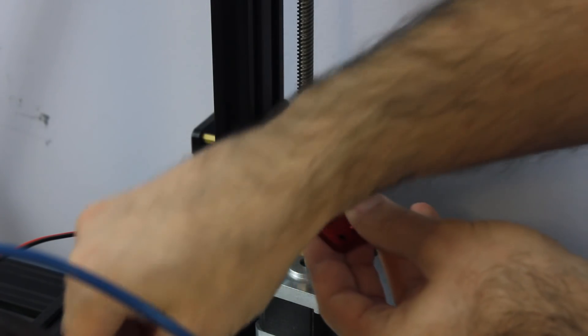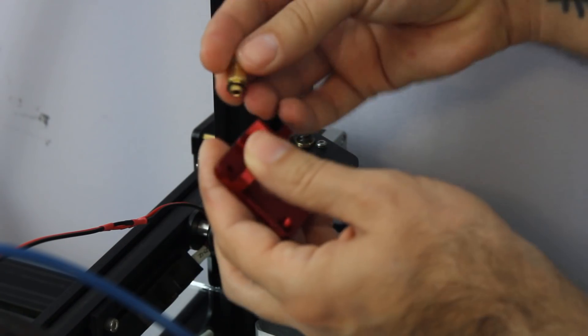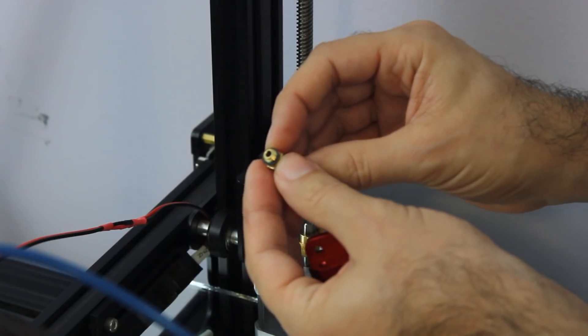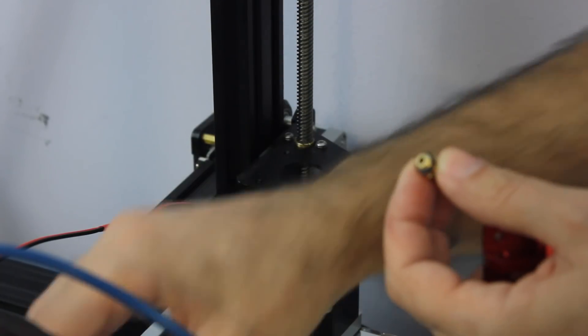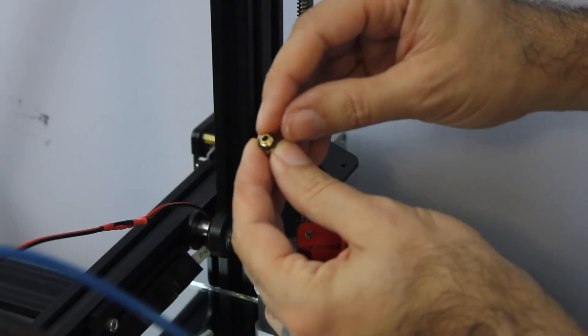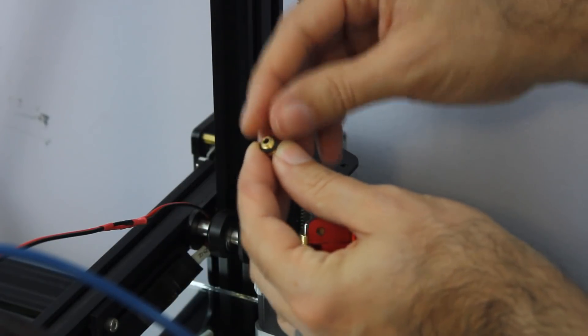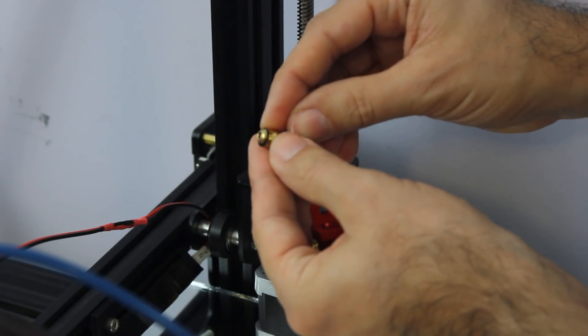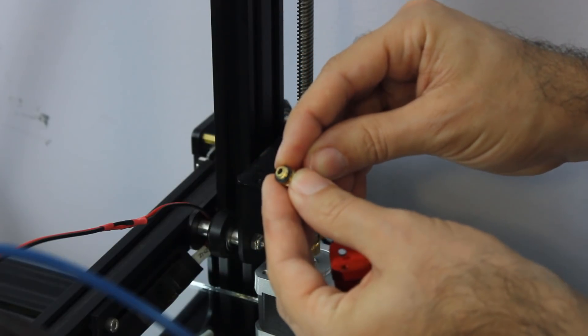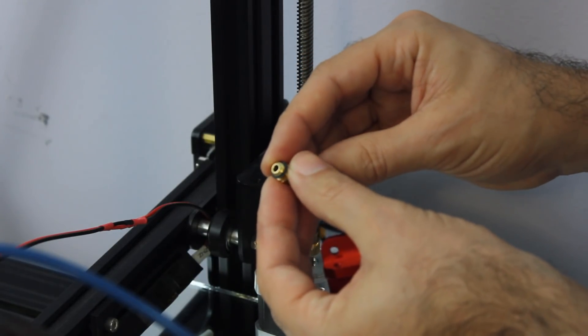Okay, then we're going to take the new one and go ahead and put this in. One thing to note is that in a previous video I showed taking this coupler and using a drill bit to bevel this edge.